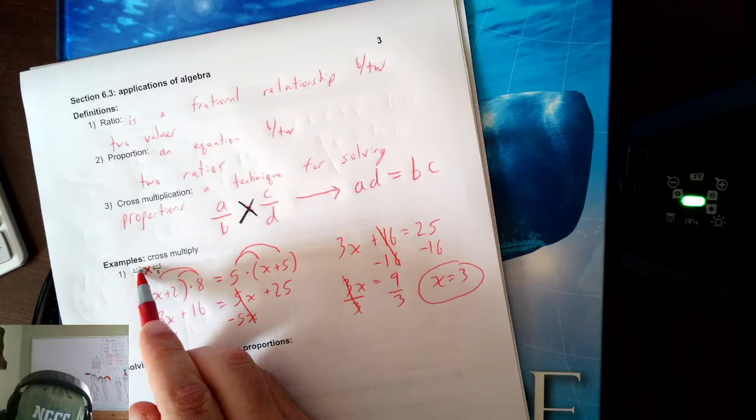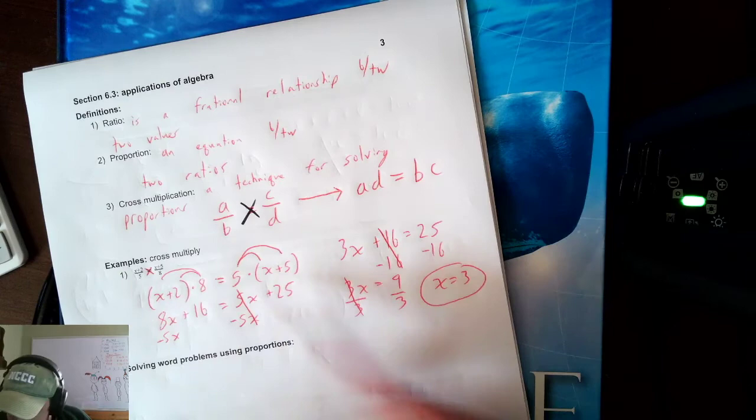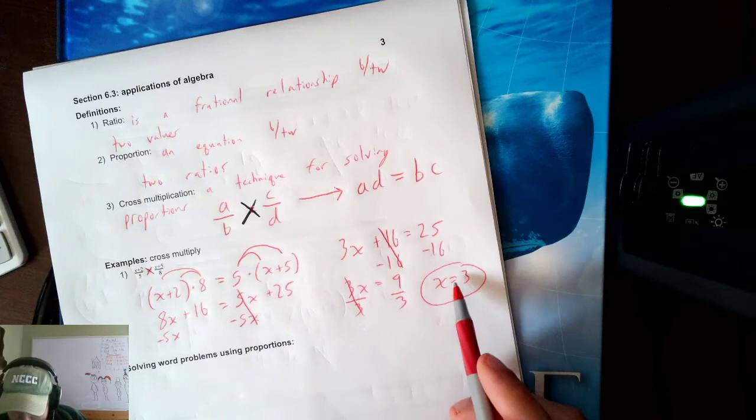Let's check: 3 plus 2 is 5 over 5, and 3 plus 5 is 8 over 8. Both sides equal 1. Plugging back in mentally, I can see that this answer is correct.